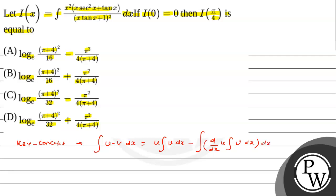To choose u and v in the question, among whatever functions we have — this is algebraic, and there is also trigonometric. So here we will use the concept that whichever function's integration can be found easily, treat it as the second function.